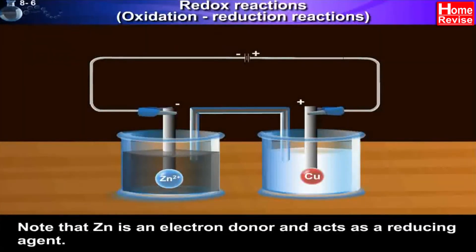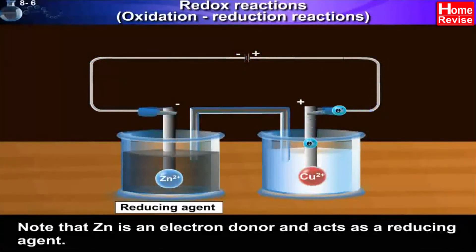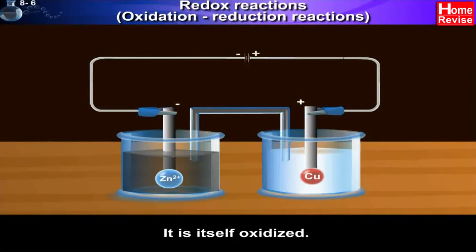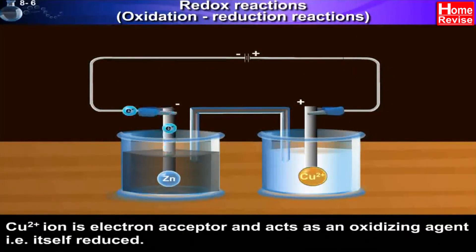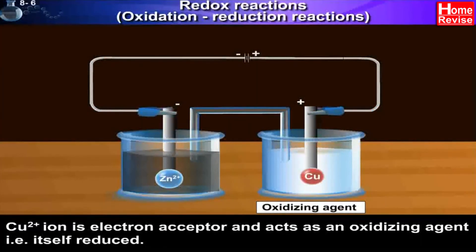Note that Zn is an electron donor and acts as a reducing agent — it is itself oxidized. Cu2+ ion is an electron acceptor and acts as an oxidizing agent — that is, it is itself reduced.